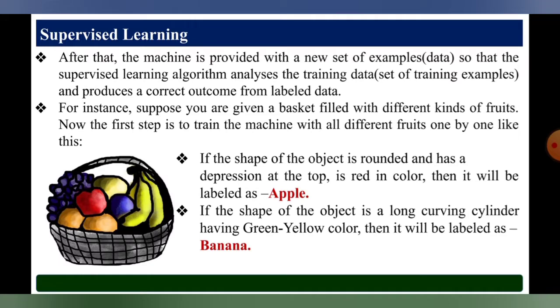After the machine is provided with a new set of examples or data, the supervised learning algorithm analyzes the training datasets and produces a correct outcome from labeled data. For instance, suppose you are given a basket filled with different kinds of fruits. Now the first step is to train the machine with all different types of fruits one by one.